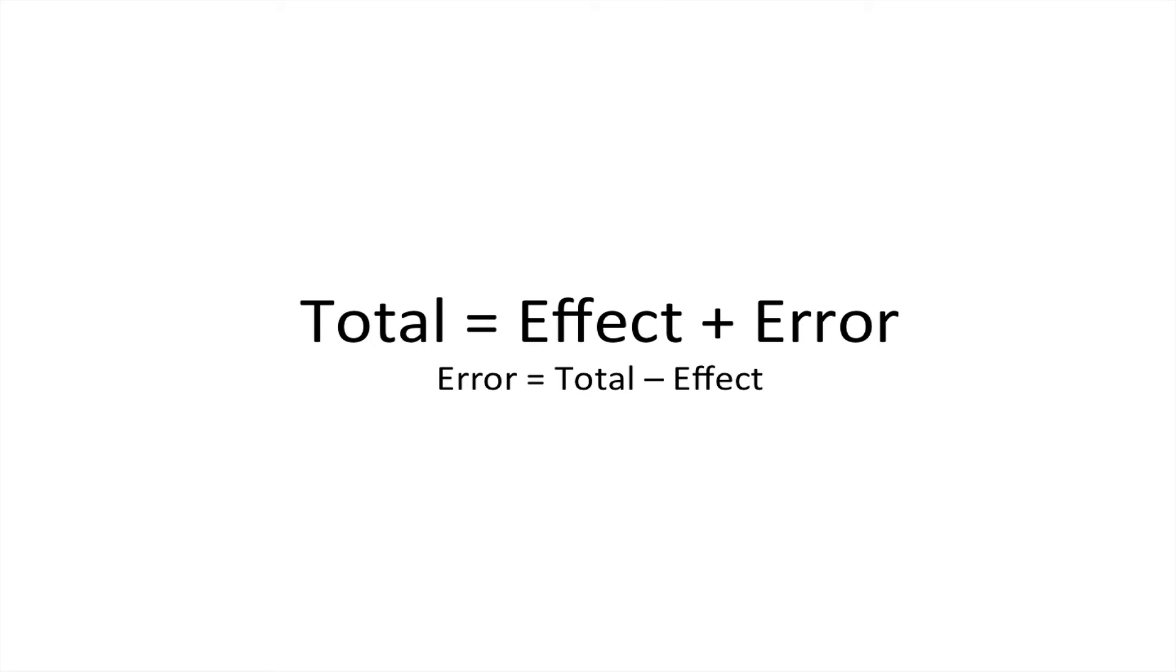Once we've got that, we know from previous videos that the total amount of variability in our data, because of the first steps we did, is the total amount of variability within the variability itself, because we've essentially calculated a variability score for each score. And we know that the total variability equals the effect plus error variance that we can't explain.